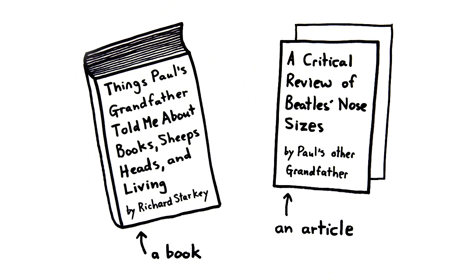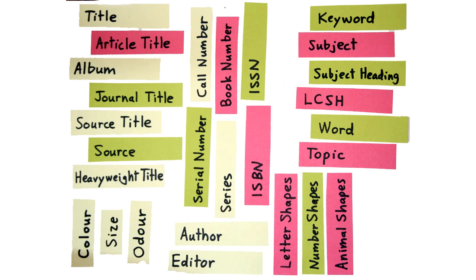Whether you're searching for books in the library catalog, or searching for journal articles in a database, or even searching in Google Scholar, there are often many search options. But you can get by with using just a few.